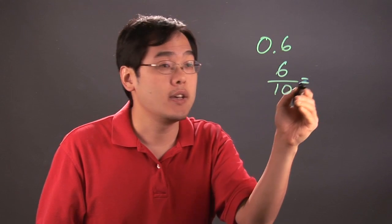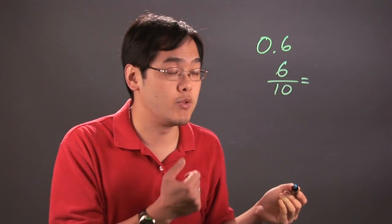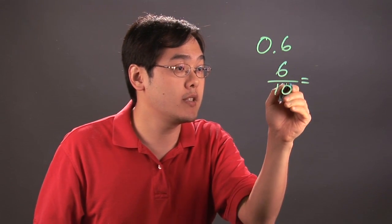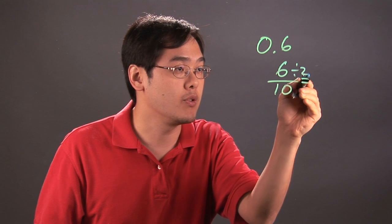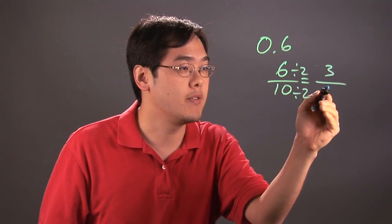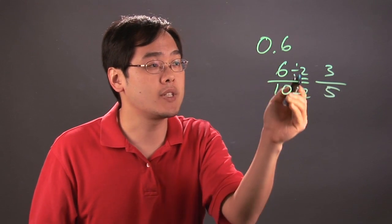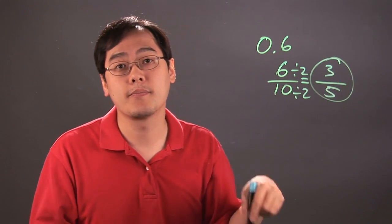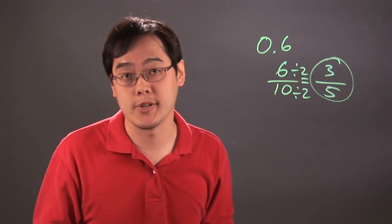So 6 tenths, now what you have to think about is, is 6 tenths reducible? Now 6 tenths looks like they both have a factor of 2, so you divide both the top and bottom by 2. So 6 divided by 2 is 3, 10 divided by 2 is 5. So 6 tenths is really 3 fifths as a fraction in lowest common denominator form.